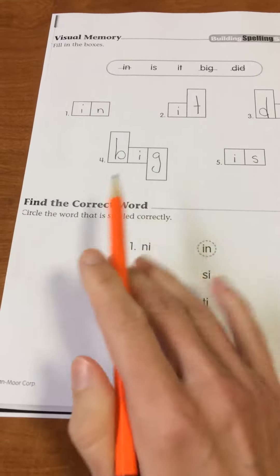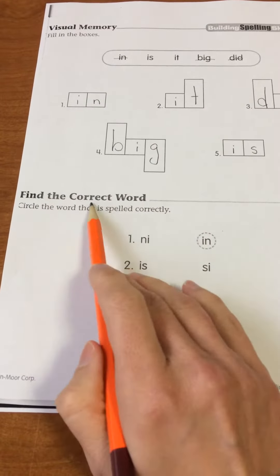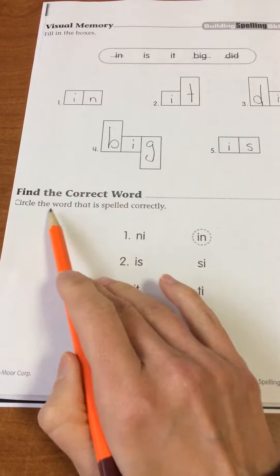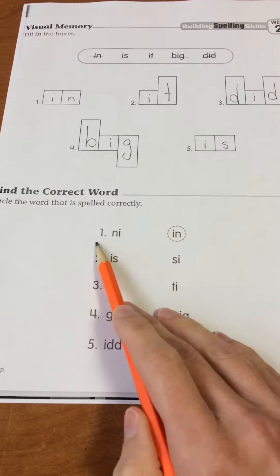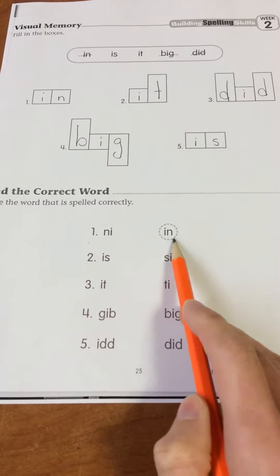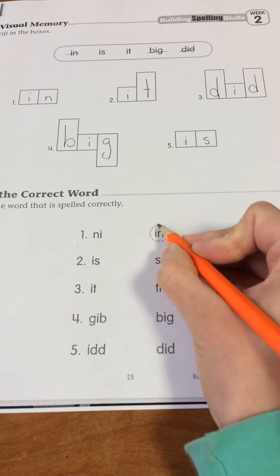Phew! Oh, excuse me. All right, next one says find the correct word. Circle the word that is spelled correctly. Number one, we have N, I and I, N. So in is spelled I, N.